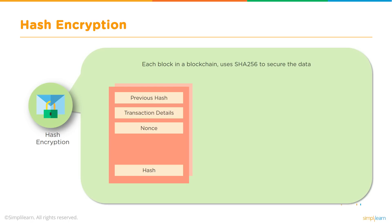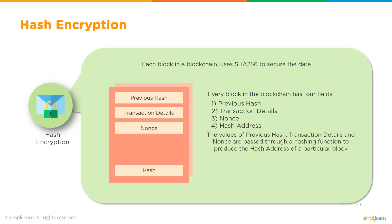Each block in a blockchain uses SHA-256 to secure its data. This is a typical structure of the header of a block. Every block in the blockchain has four fields: it has a previous hash, it has transaction details, it has a nonce, and a hash address. The values of previous hash, transaction details, and nonce are passed through a hashing function to produce a unique hash address for a particular block, and that hash address becomes the unique identity of that block across the network.